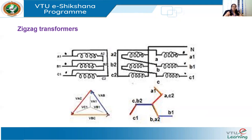We have seen two methods here: the inline choke, connected mainly with adjustable speed drives, and the zigzag transformer, which can be connected to any commercial facility. We are going to stop here, and in the next class we will see more devices used for mitigation of harmonics — mainly active and passive filters. Thank you.